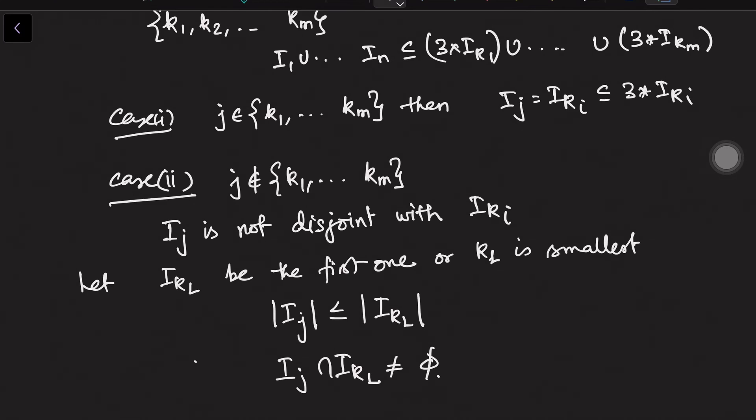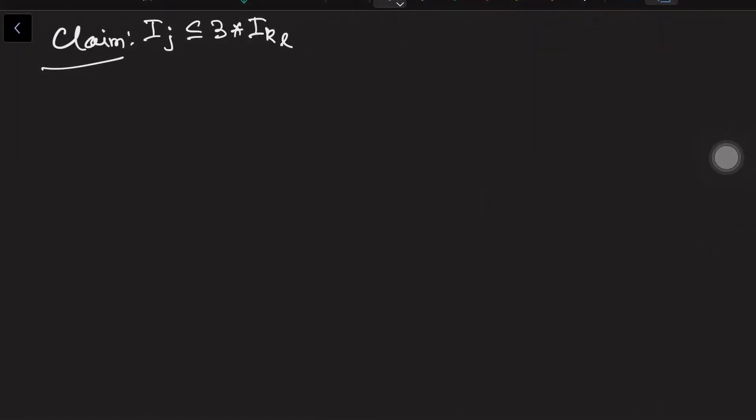Now what remains to prove is that this i_j can be covered by 3 times i_kl. So how to prove this? See, as we have already learned, any interval i_j, I will consider this as ball centered at some center c and of radius r, and this i_kl also ball centered at center d and radius s.